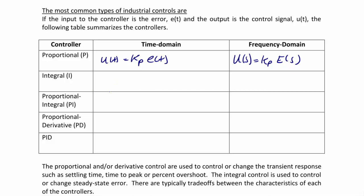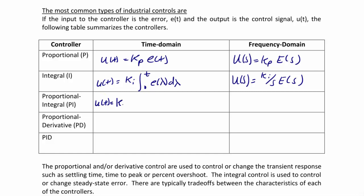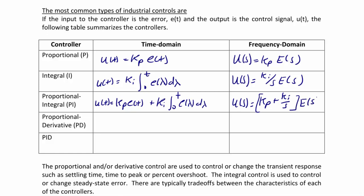The integral controller takes a gain and multiplies it by the integral of the error: U(T) equals KI times the integral from 0 to T of E(lambda) d-lambda. In the frequency domain, U(S) equals KI over S times E(S). Proportional integral is the sum of the prior two: U(T) equals KP E(T) plus KI times the integral from 0 to T of E(lambda) d-lambda. In the frequency domain, U(S) equals KP plus KI over S, the entire quantity multiplied by E(S).